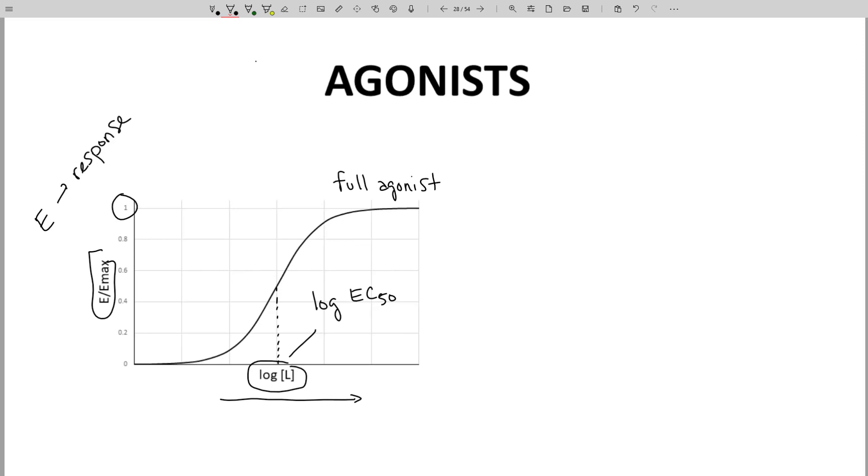This is sometimes also called Kd. So EC50 equals Kd. And Kd is the dissociation equilibrium constant for the agonist ligand and its receptor. EC50 and Kd are both potency measures. The lower the value, the higher the potency of the ligand.